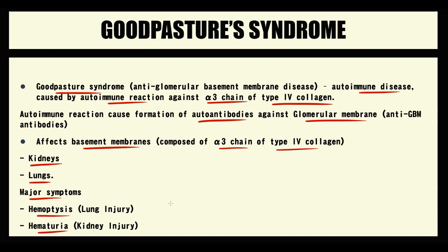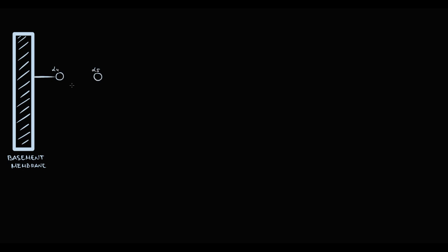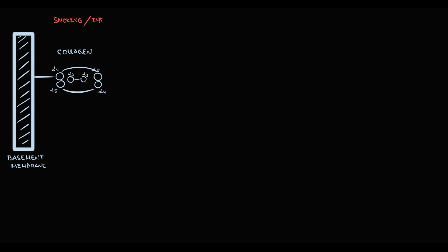To explain the mechanism of clinical symptoms, we have to know the pathogenesis. The basement membrane is composed mostly of type 4 collagen. Type 4 collagen has two alpha-4 and two alpha-5 subunits, which are bound to each other, and inside it collagen has two alpha-3 subunits. Importantly, the alpha-3 subunits are unexposed to the external environment — in normal conditions they are hidden inside the collagen structure. But sometimes smoking, inflammation, or infections can cause damage to the collagen molecule.